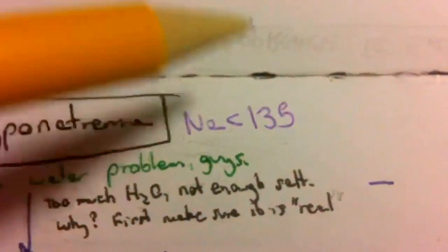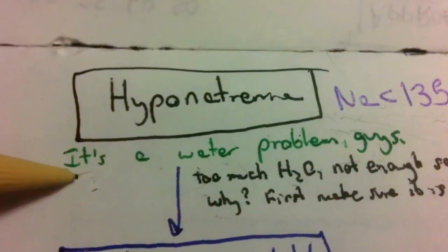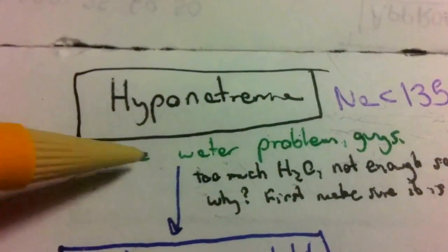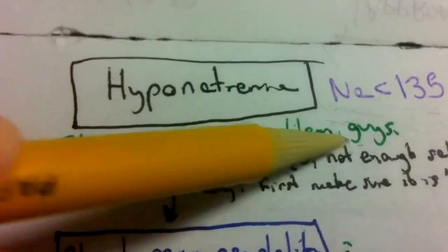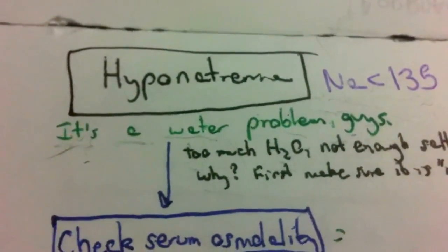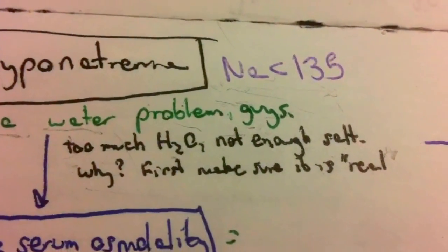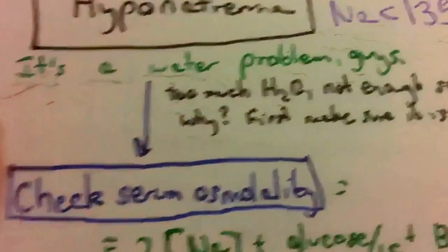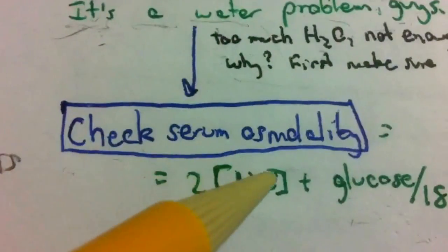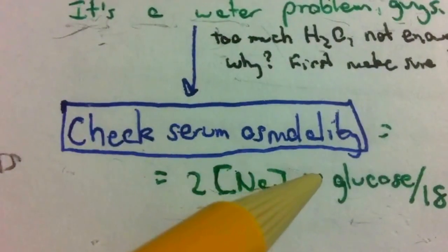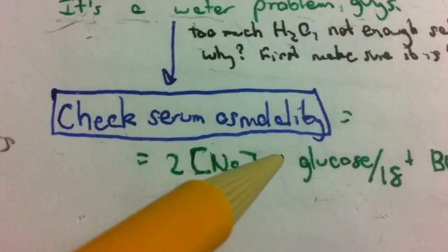Your patient may have any of these symptoms, you run the BMP, and sodium is less than 135. Hyponatremia is not a salt problem - it is a water problem. There's too much water, not enough salt. The first step to working up a hyponatremia is to check the serum osmolality.